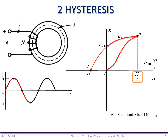If H is now reversed by reversing the current I, the flux in the core will decrease, and for a particular value of H, such as minus HC, the residual flux will be removed. This value of the magnetic field, minus HC, is known as the coercivity or coercive force of the magnetic core.